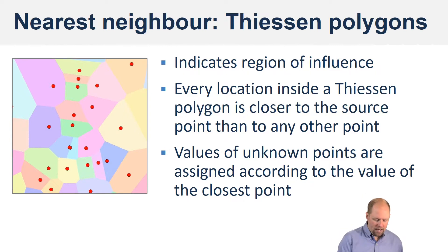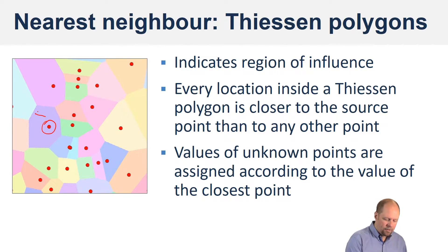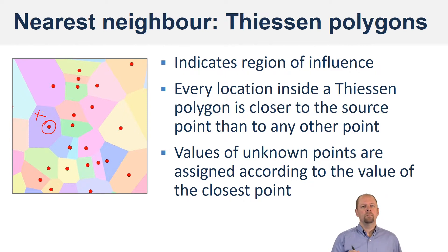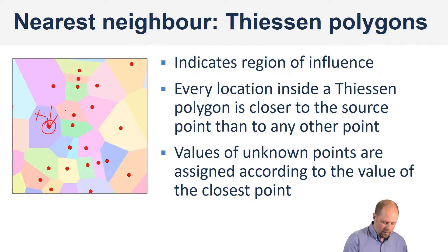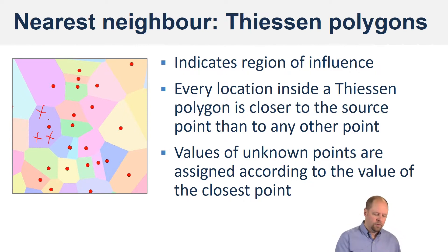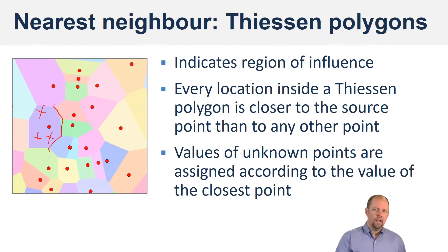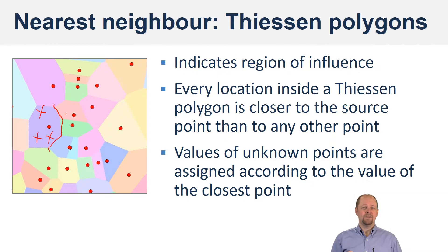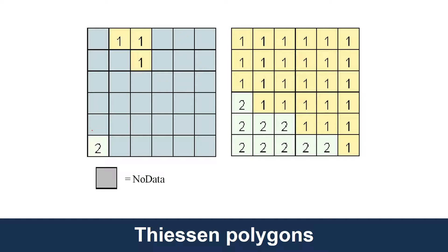For any given point location, any location that's closer to that point than to any other point will be assigned the same value as that point. So if you're here or here or here, because these are all closer to this point than to any other one — based on the polygon boundary — then it's going to say: if it's closer, it's more similar. And because this is a pretty simple method, it's not just saying it's similar, it's saying it's exactly the same. This is how Thiessen polygons work.